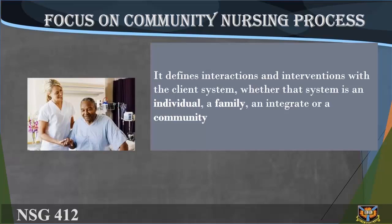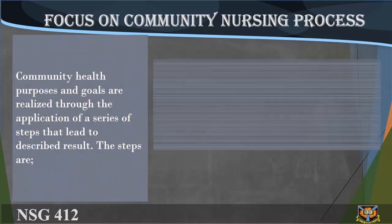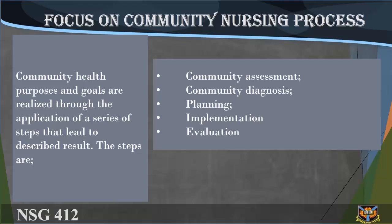Community health purposes and goals are realized through the application of a series of steps that lead to described results. The steps are: one, community assessment; two, community diagnosis; three, planning; four, implementation; five, evaluation.